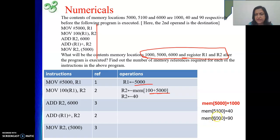So what is this number? 5100. So at address 5100, what is there in memory? 40. So that 40 is moved to R2. So after the second instruction, R1 is having 5000. R2 is having value 40. This is clear.